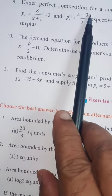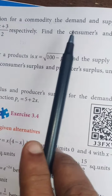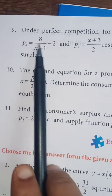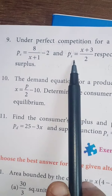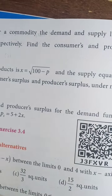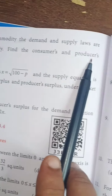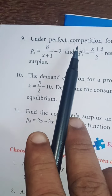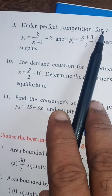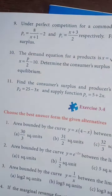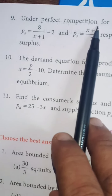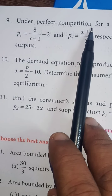Under perfect competition for a commodity, the demand and supply laws are given. PD is the demand function and PS is the supply function. We have to find CS and PS — consumer surplus and producer surplus. Remember, when you are given perfect competition, you have to consider equilibrium. At equilibrium, PD and PS are equal. This is a key point: if perfect competition is given, consider PD equals PS.